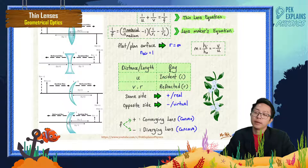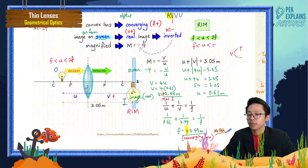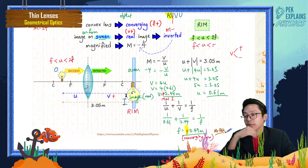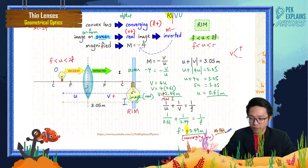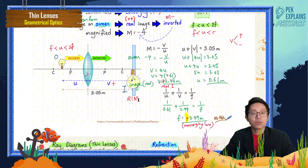I solved this question well because I remembered the acronym RIM — for a real inverted magnified image, the object distance must be between f and 2f. Also remember: object is compared with incident ray, image is compared with reflected ray. A real image must form on the same side as the reflected ray. Always draw the incident and reflected rays first to draw correctly.